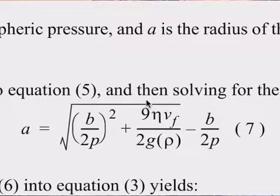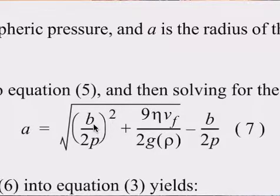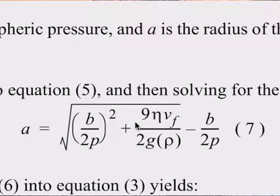We're going to calculate equation number seven, and we'll be doing this in Microsoft Excel, going between this sheet, conversion calculators, and Excel. The first things we want to put in are all of the coefficients — we want to put in B first, which is a coefficient given to us, and then P, our atmospheric pressure, making sure it's in Pascals.